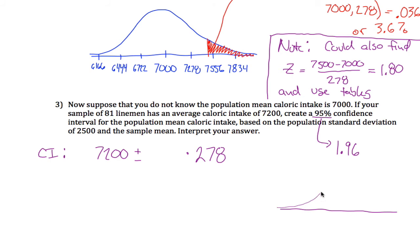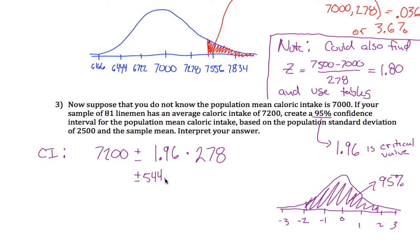So what that's saying is 1.96 standard deviations above and below the mean. Let me draw a picture. If you go 1.96 above and below the mean, what you get is 95% in here. So this is what's called our critical value. And it goes here. So we need to figure out what is 1.96 times 278.